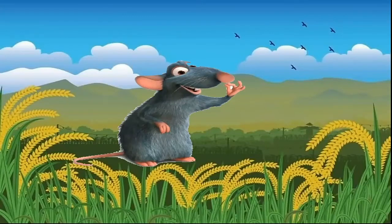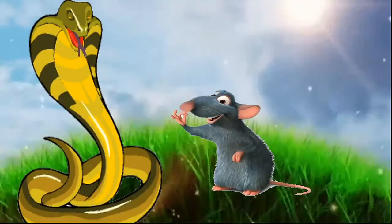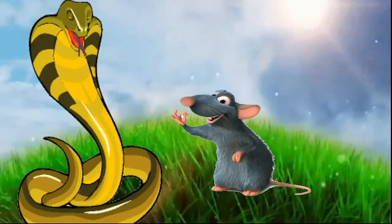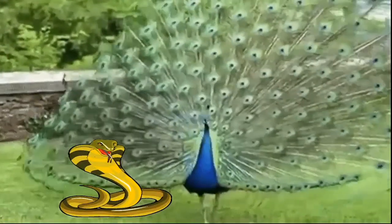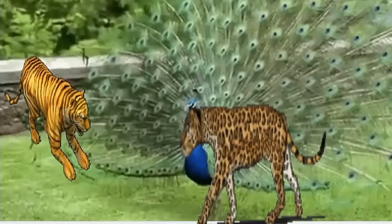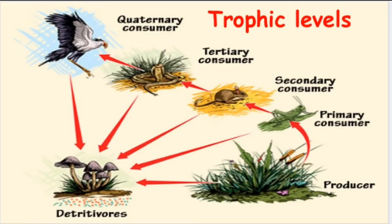Consider this example: the rat eats grains, the snake eats rat, and the snake is prey for peacock. Peacocks are prey for tigers and leopards. In all food chains there is a top-level predator that has no natural predators. In a forest, there are no natural predators for tigers.